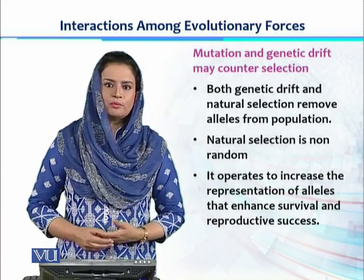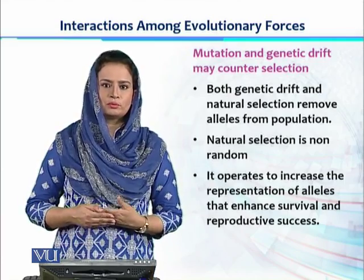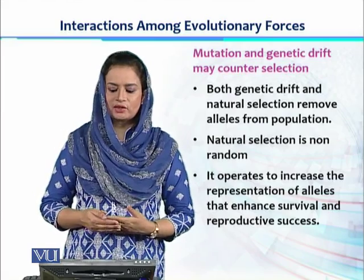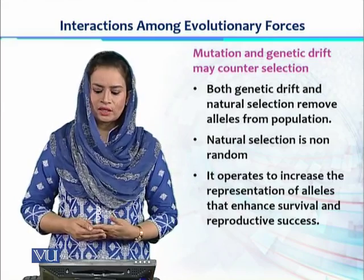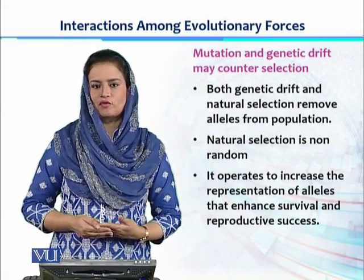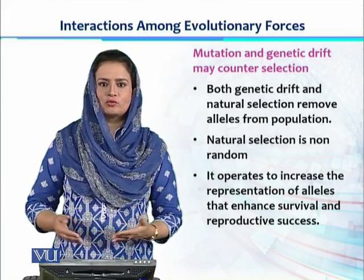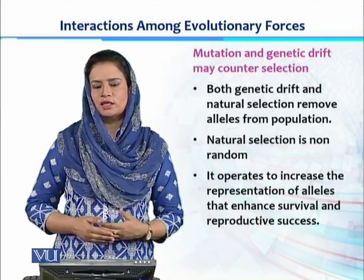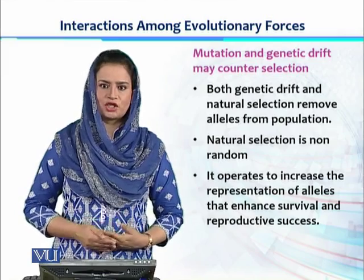We know that mutation and genetic drift may go against the process of natural selection. Because genetic drift and natural selection are removing certain alleles which are not favored by these processes from one population. For example, natural selection is removing the inferior alleles — those alleles which are reducing the reproductive capacity of that species in that population.